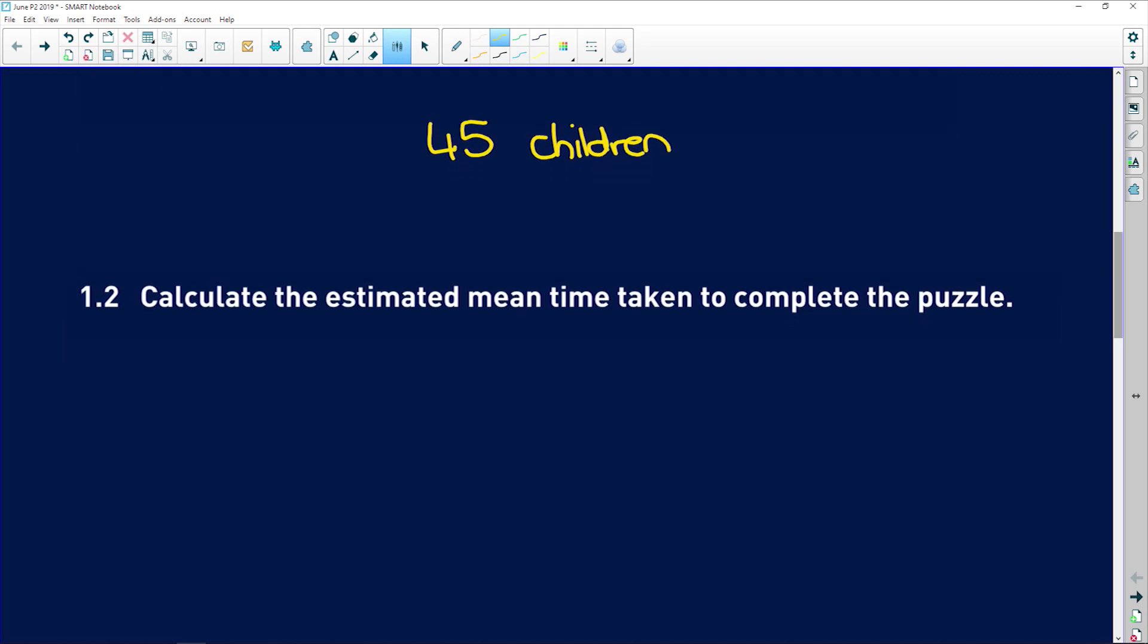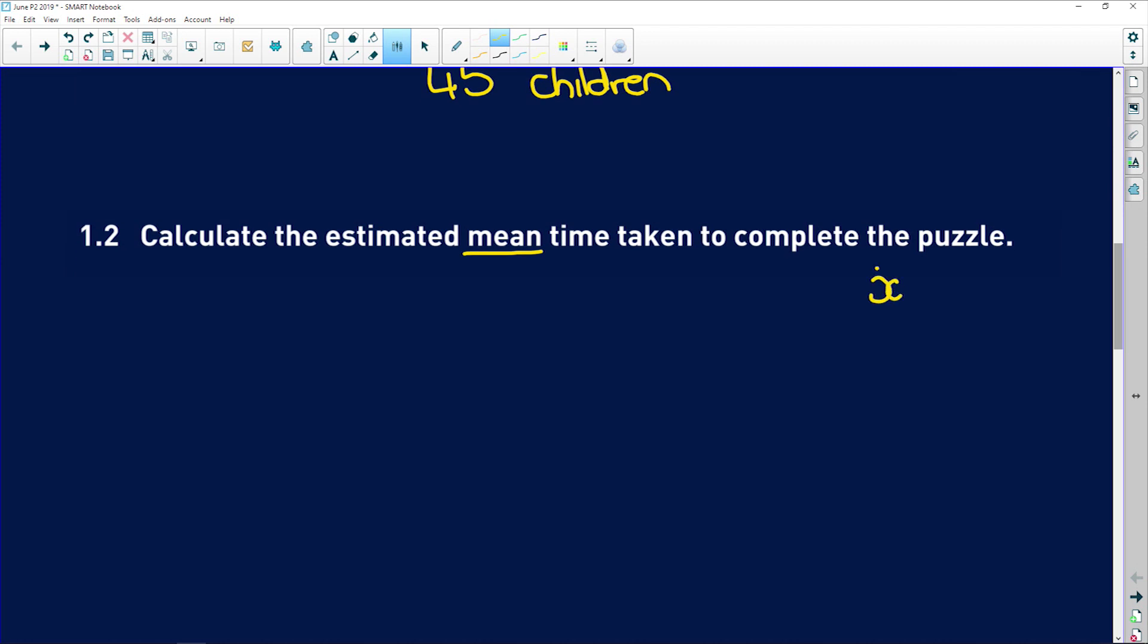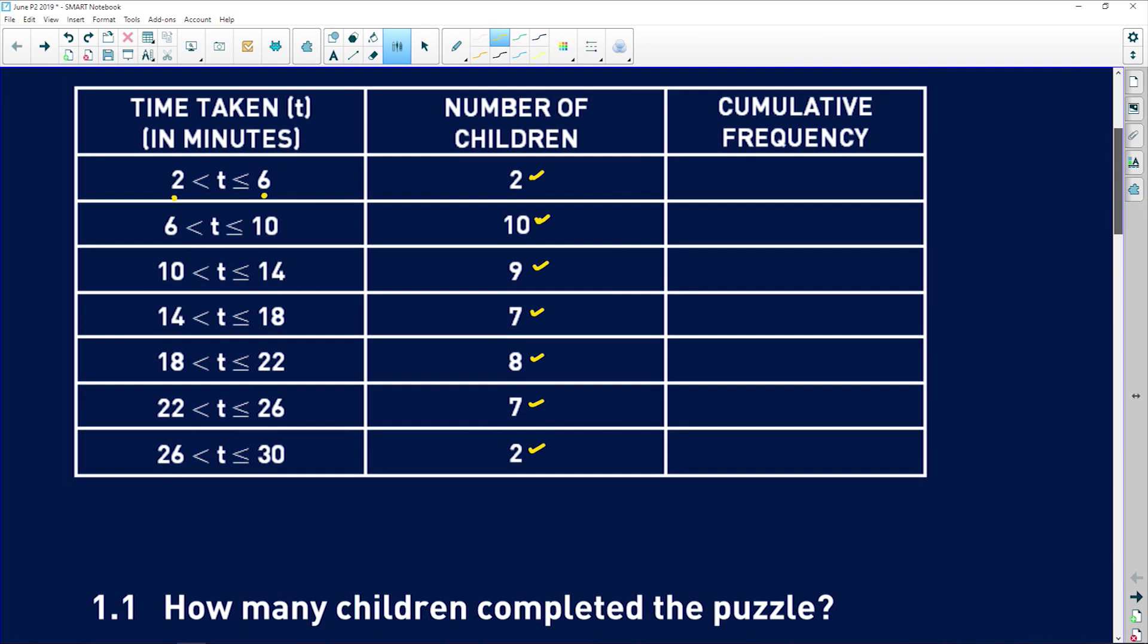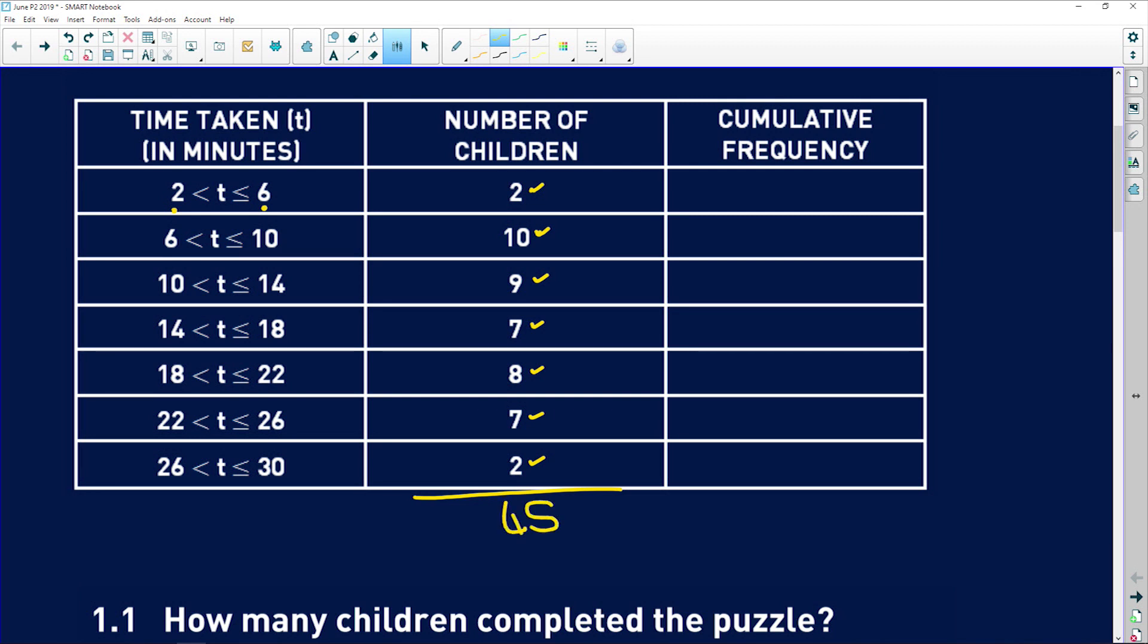Question 1.2 says calculate the estimated mean time taken to complete the puzzle. So remember, mean is usually equal to the total, obviously the number of times - so you would say the sum of the times divided by the total. But now because we're dealing with intervals, what you would do is obviously take the total number of children which is 45 as the total, but in each of these intervals you need to take the midpoint. So for that interval it would be four, this one is eight, and so on. You need to take the midpoint of the interval.